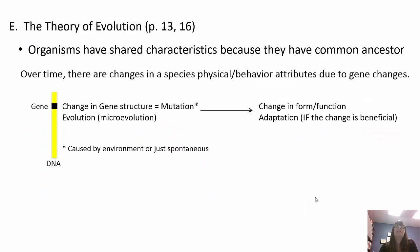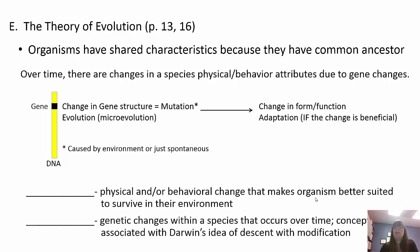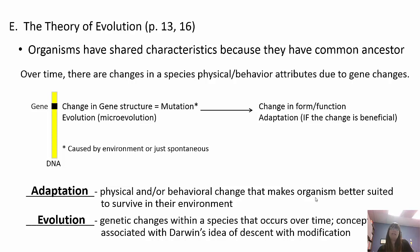The theory of evolution states that organisms share a common ancestor and therefore have shared characteristics. The definition of evolution is gradual change over time. Over time, you see changes in species' behavior because of gene changes. A mutation is a change in the DNA — a change in gene structure — and it leads to a change in form and function. If the change is beneficial, it's going to be an adaptation. It can be caused by the environment or be spontaneous, and species have to adapt to their environments or they don't survive. An adaptation is a physical or behavioral change that makes the organism better suited to survive. Evolution represents genetic changes within a species over time, associated with Darwin's descent with modification — you are descendants modified to fit your environment.